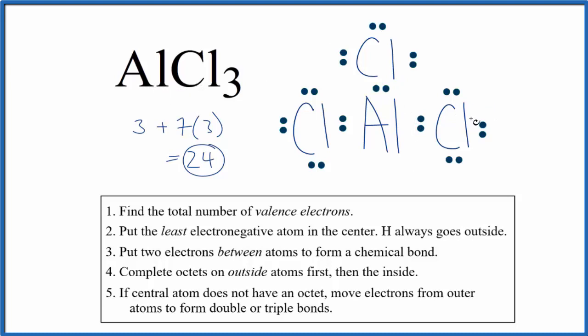If we looked at the molecular geometry, we would expect this to be a trigonal planar molecular geometry. Each of the three chlorines pushes away and spreads out into a plane, and the bond angles would be 120 degrees.